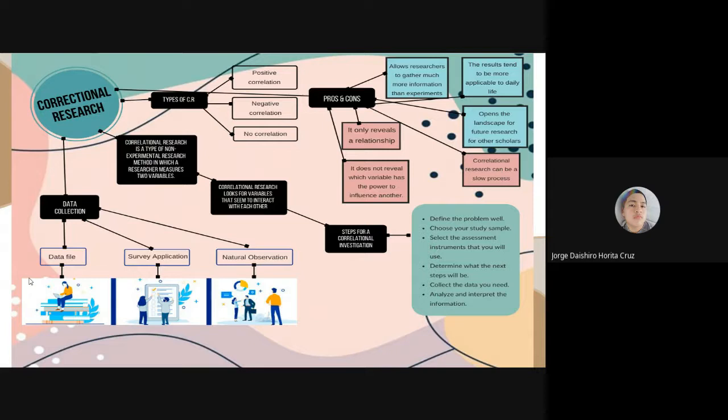Correlational research looks for variables that seem to interact with each other so that when one variable changes, the person doing an investigation will be clear about the way in which the other variables also change.